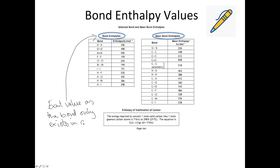You'll only get a hydrogen-to-hydrogen bond in a molecule of hydrogen. You'll only get an oxygen-to-oxygen double bond in a molecule of pure oxygen. You'll only get a nitrogen-to-nitrogen triple bond in a molecule of nitrogen. So you get the idea — I'm just emphasising the point.